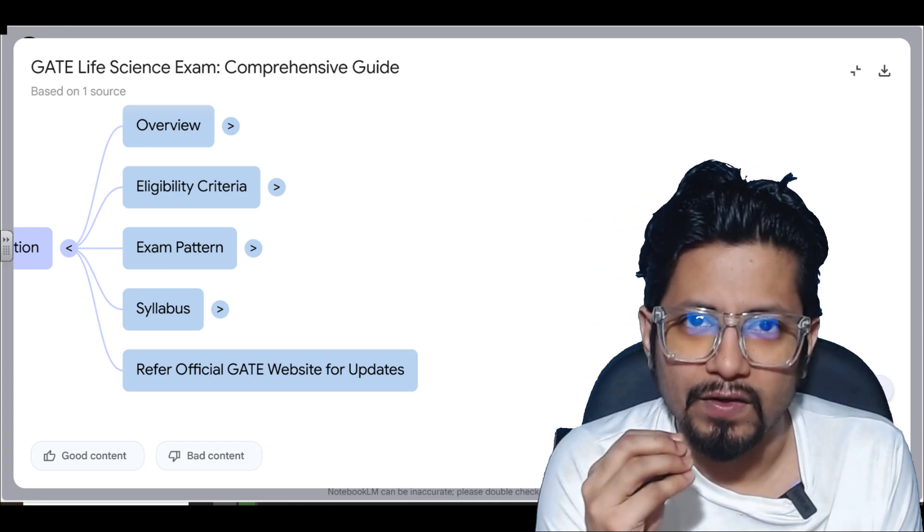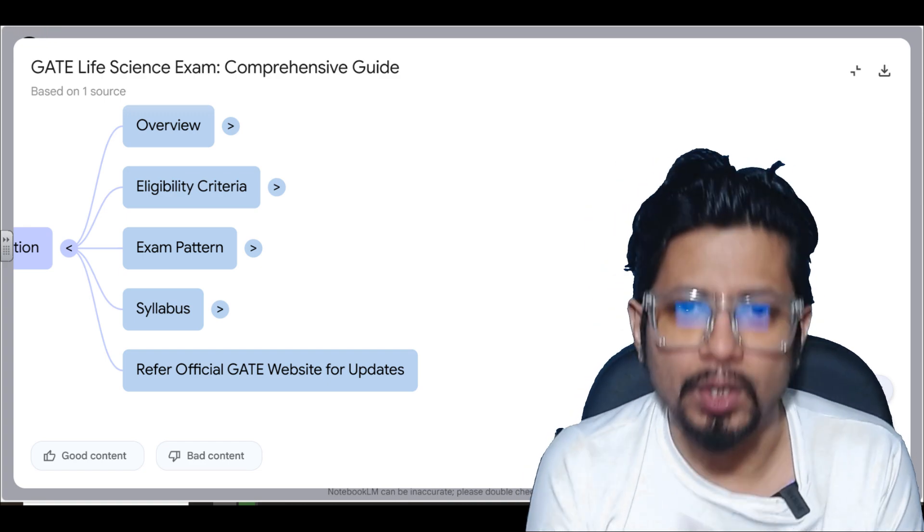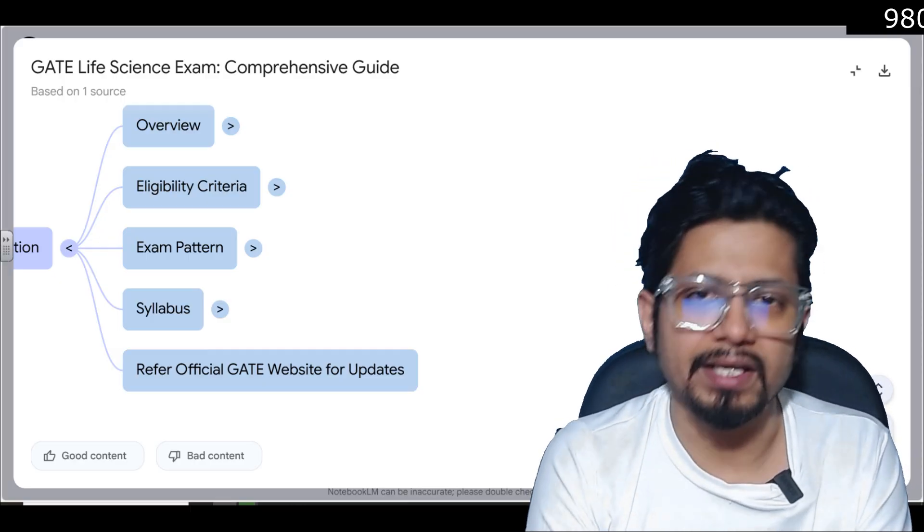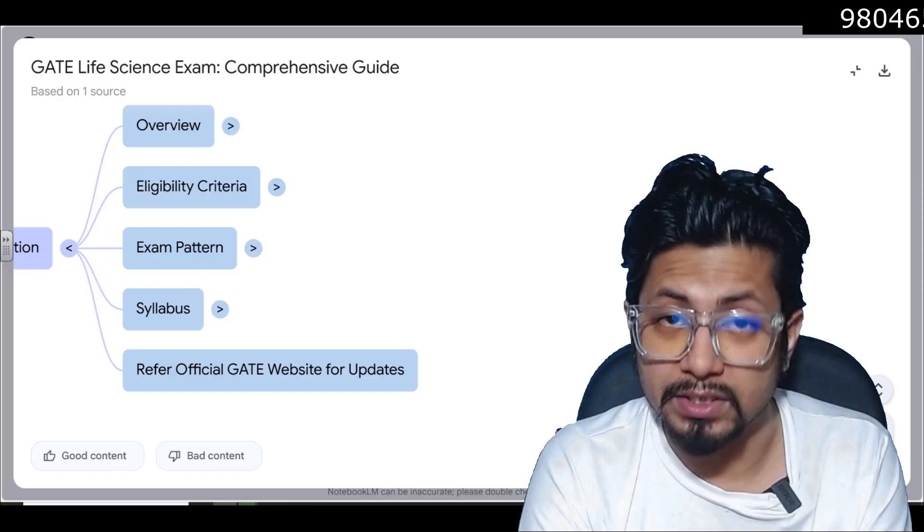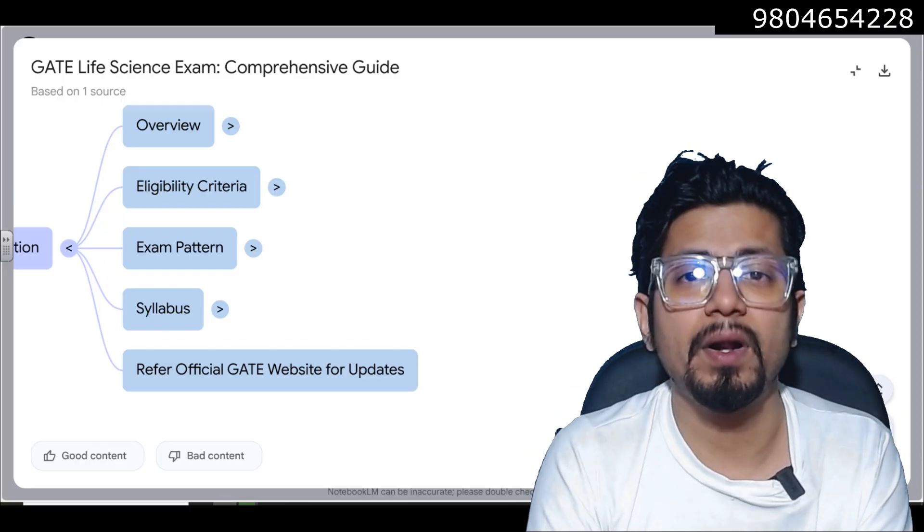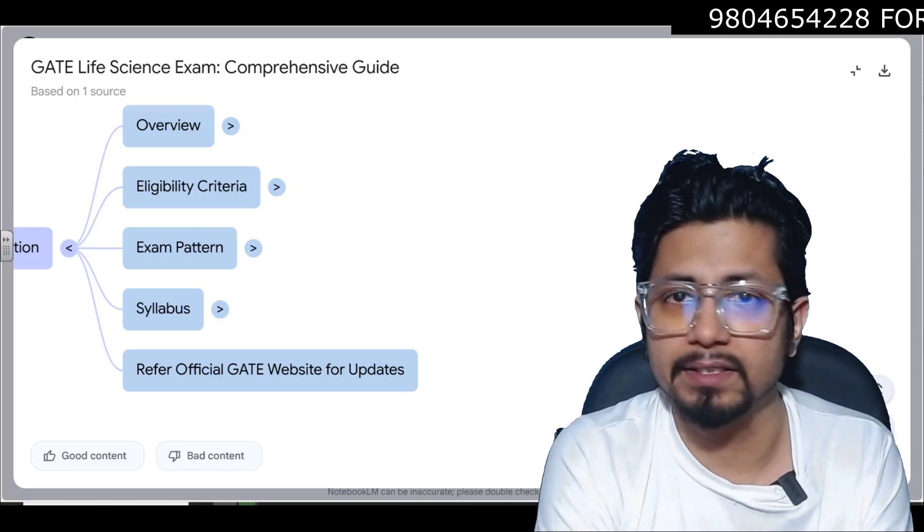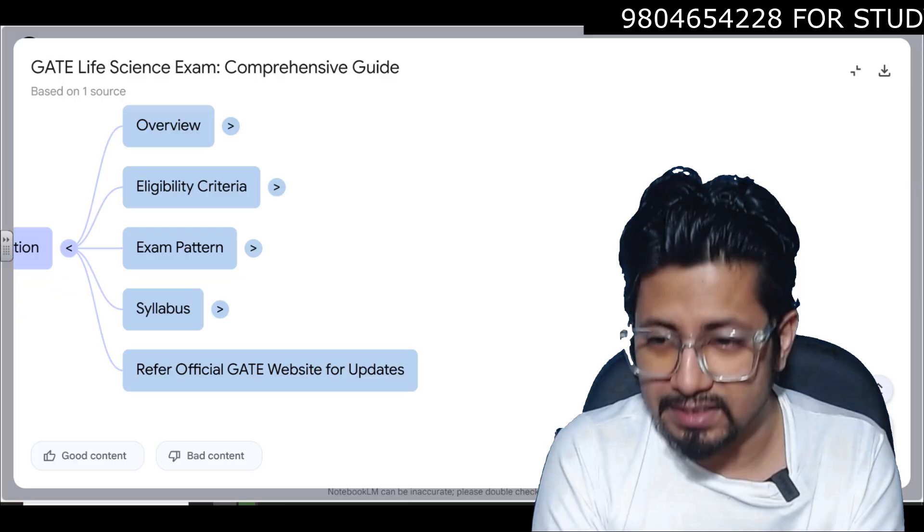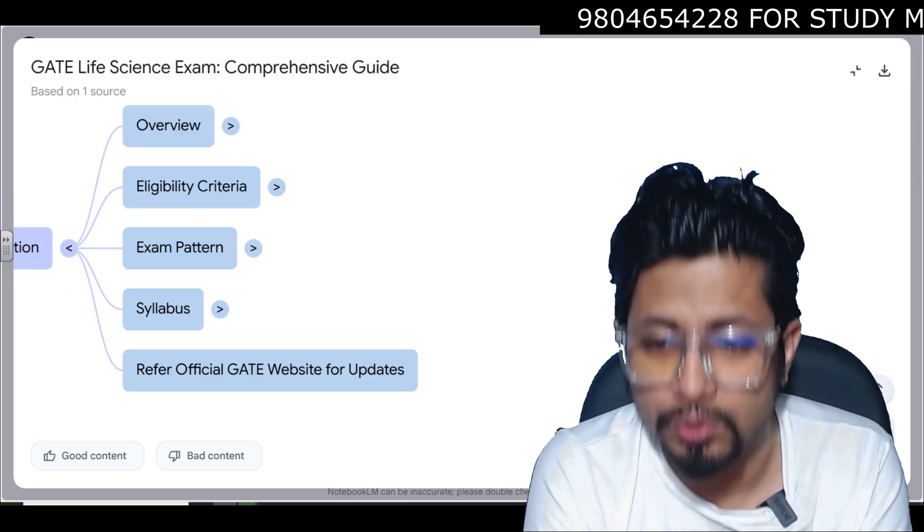What is the syllabus of GATE Life Sciences? We know GATE Life Sciences are divided into three different sections. There is a General Aptitude section which is compulsory, there is also a Chemistry section which is compulsory, but apart from General Aptitude and the Chemistry section, there is also this other syllabus of the subject that you choose.